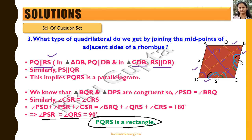The important thing to note is that we reached the conclusion that these two angles are 90 degrees. We clearly see that CSR and CRS are equal, and that gives us angle PSR and angle QRS equal to 90 degrees.